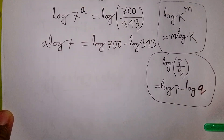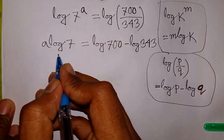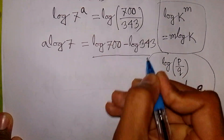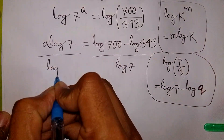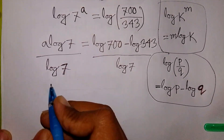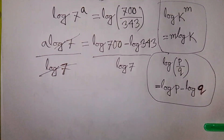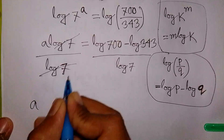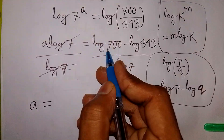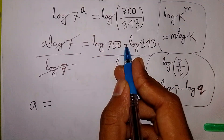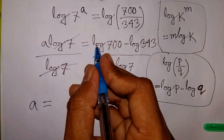Now, we need the value of a. So we divide both sides by log 7. We divide by log 7 on both sides, and this log 7 on the left cancels out, leaving a equal to log 700 minus log 343, all over log 7.